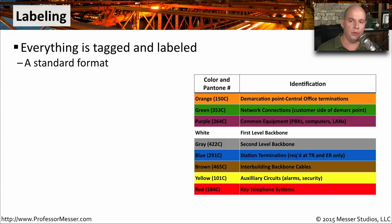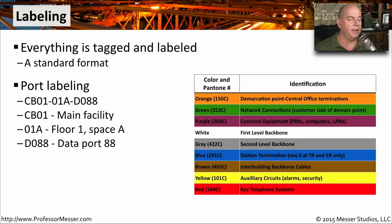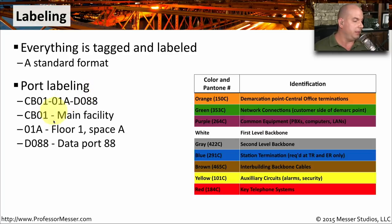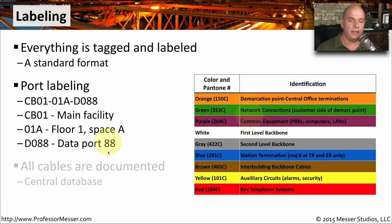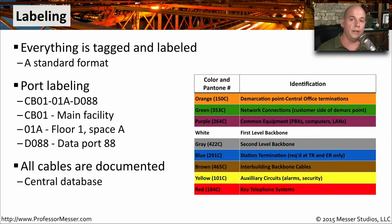Everything should be tagged and labeled in a very standard format. For instance, you should have standard port labels, such as CB01-01A-D088. CB01 identifies the main facility, 01A is floor 1 space A, and D088 means it is data port number 88. You can also use colors so you know exactly what type of data is running over what type of cable. All of this should be documented and stored in a master database so that anybody can access this information from anywhere.